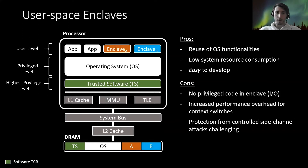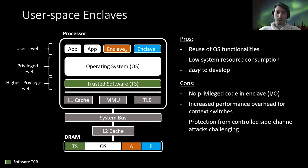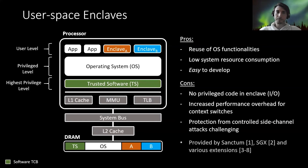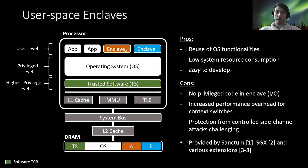On the con side, since those enclaves only run in user level, they don't have the privilege to run privileged code like drivers. There is increased performance overhead for context switching between the enclave and the operating system, and protection from control side channel attacks is challenging since the user space enclave relies on the OS for services like memory management. Enclave security architectures providing this kind of enclave include Sanctum, SGX, and various extensions built on SGX.